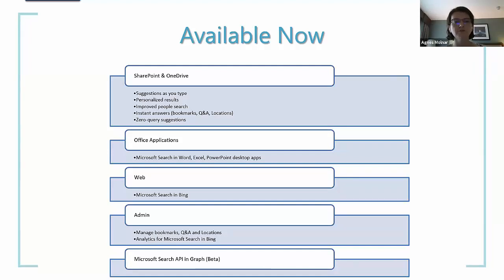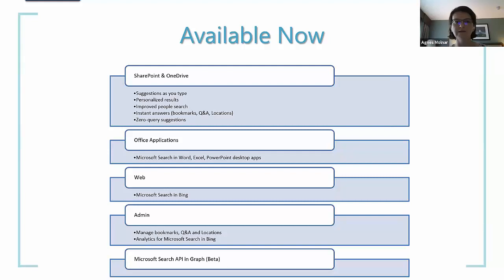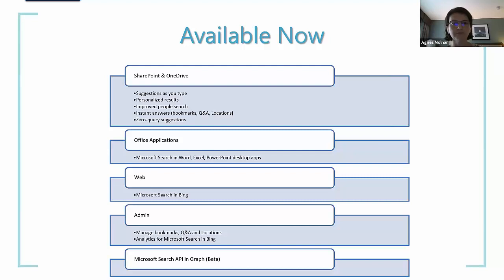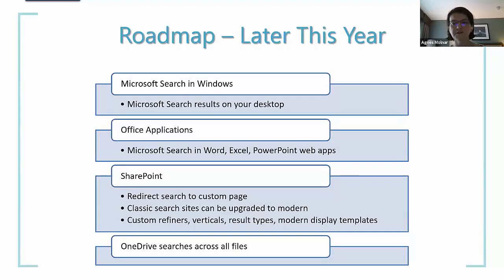In Office desktop applications - Word, Excel, PowerPoint - we already have the unified Microsoft Search box on the top. We have Microsoft Search in Bing. We can also manage bookmarks, Q&A, and locations for Microsoft Search through the administration UI. There is also a Microsoft Graph Search API which is currently in beta.